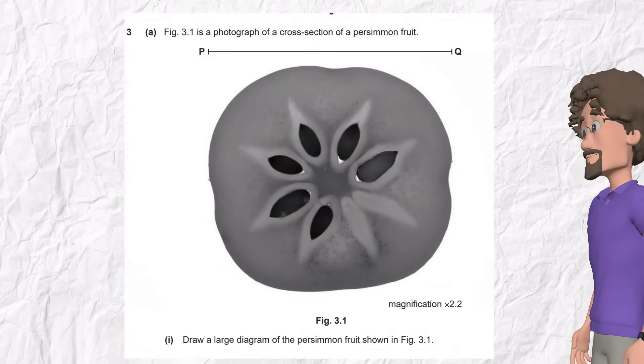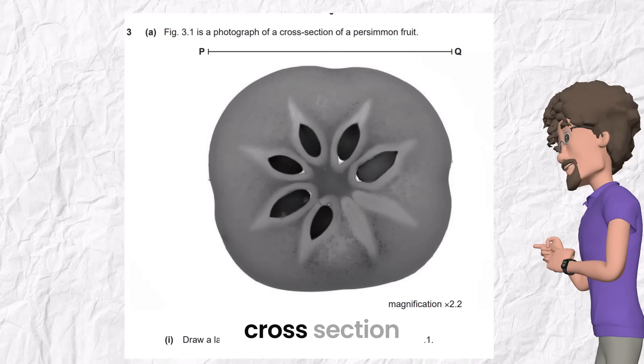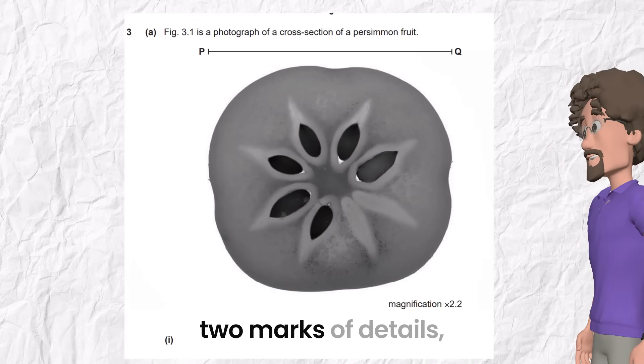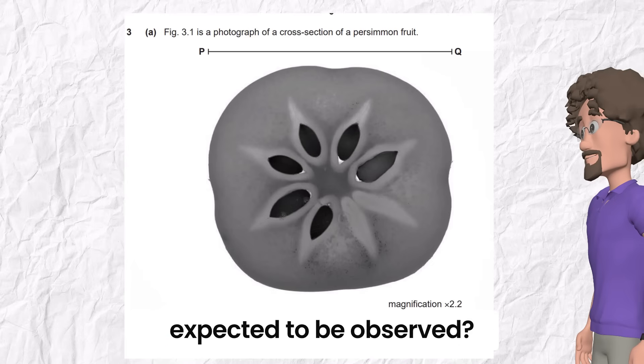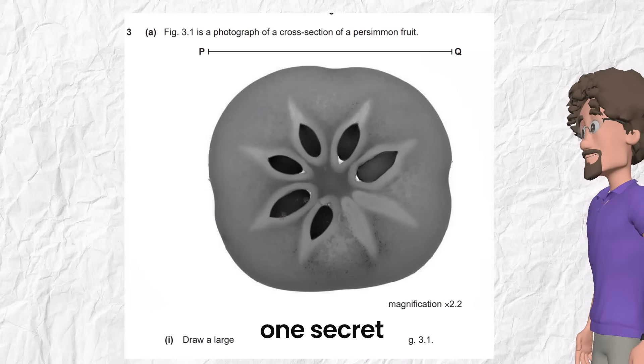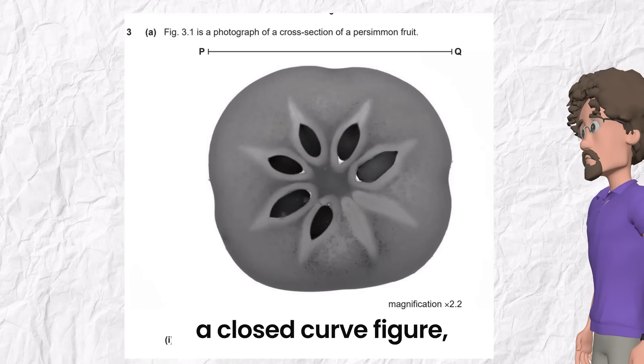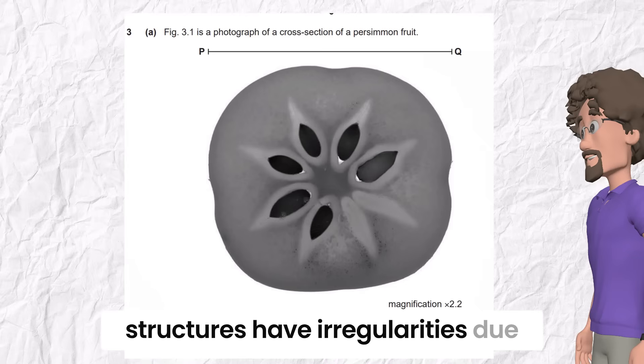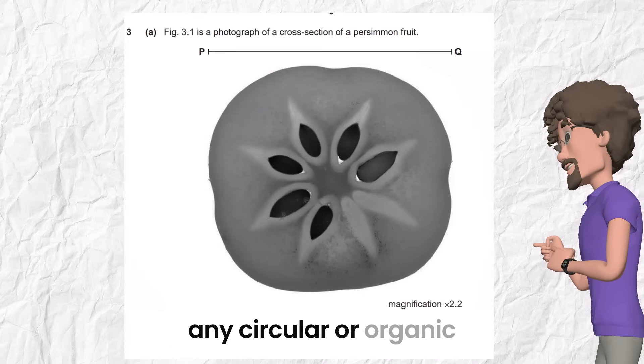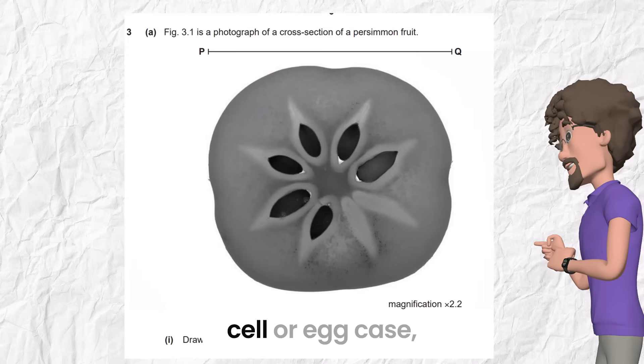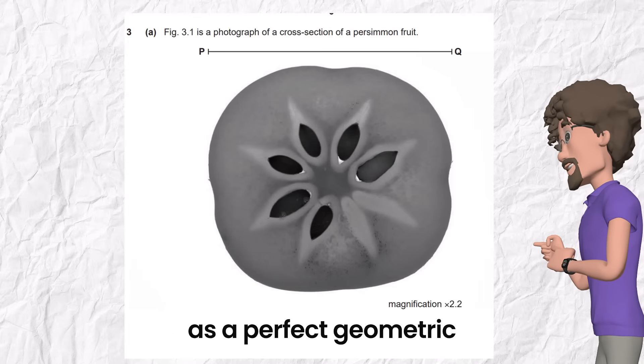Let's see another photo. It's this persimmon fruit cross-section. If we speak about two marks of details, what details here are expected to be observed? Let me tell you one secret. If they give you a closed curve figure, a cell, fruit, seed, or something else, keep in mind that natural structures have irregularities due to growth, pressure, or anatomy. And you are expected not to draw any circular or organic structure, like a fruit cell or egg case, as a perfect geometric shape.